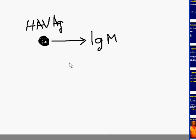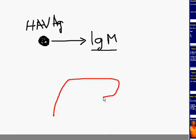For any patient with acute viral hepatitis, you must remember that there will be elevation of the IgM antibody. In addition to that, this particular virus may also cause severe injury to the hepatocytes, and as a result the patient will also release an excessive amount of two hepatocellular enzymes.